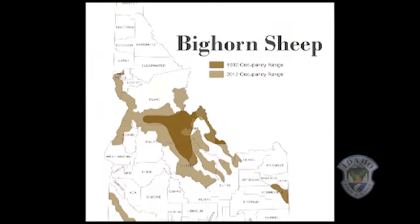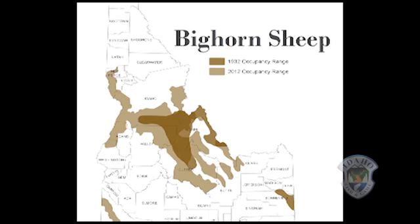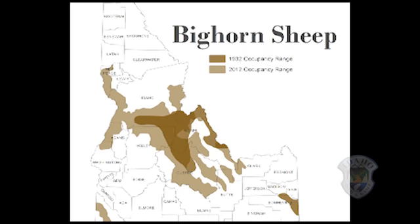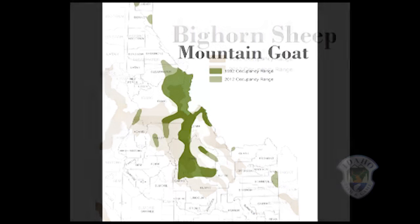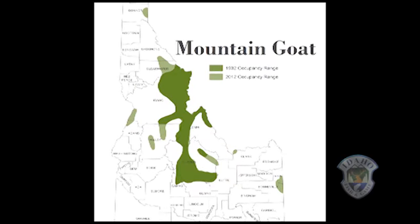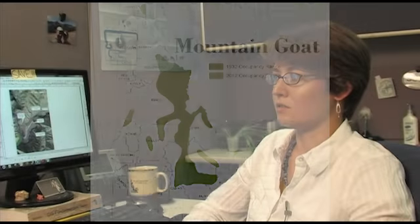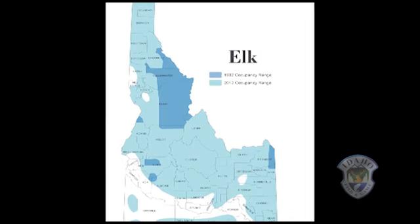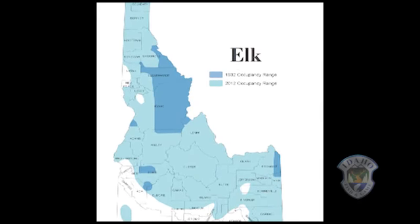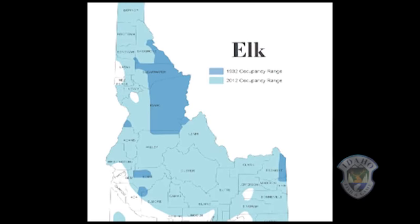Here's a simple example. Pam Bond, a GIS analyst with Fish and Game, got a PowerPoint presentation from a biologist that showed the range of various Idaho wildlife species in 1932. She used aerial imagery technology to do the same outlines using a computer, and you can easily overlay different layers using GIS.